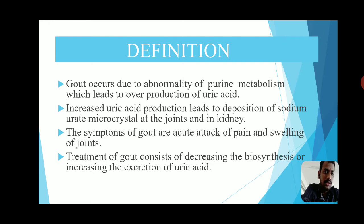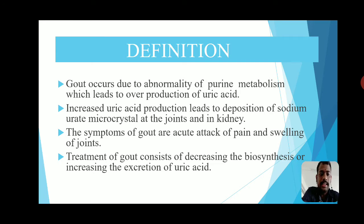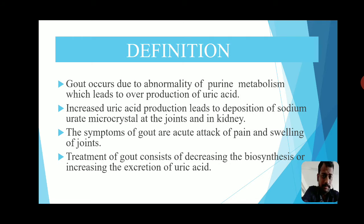In summary, gout is a metabolic disorder in which increased uric acid production leads to deposition of sodium urate microcrystals at the joints and in the kidneys, producing pain, swelling, and inflammation. Treatment involves decreasing the biosynthesis of uric acid or increasing its excretion through the kidneys.